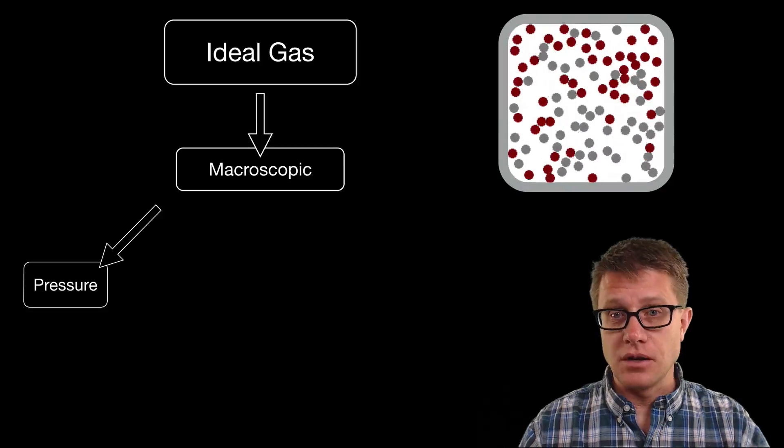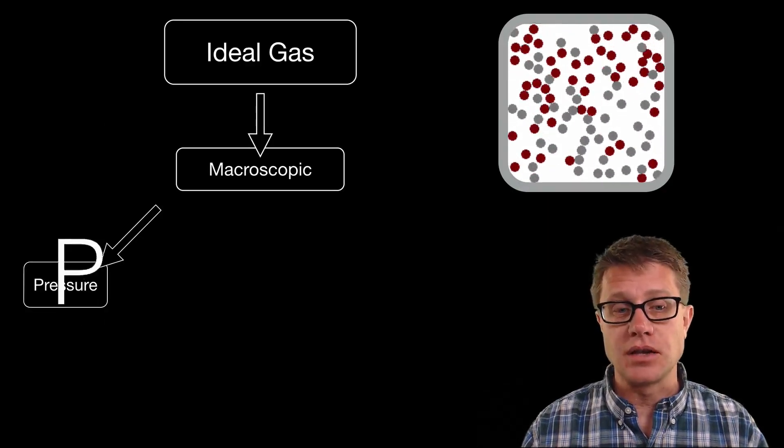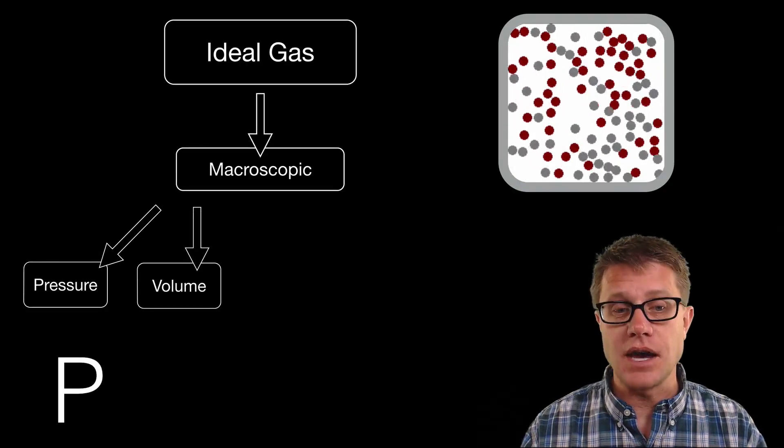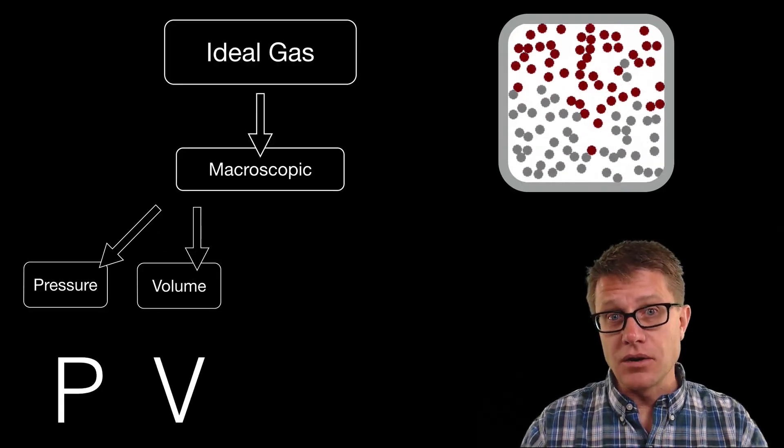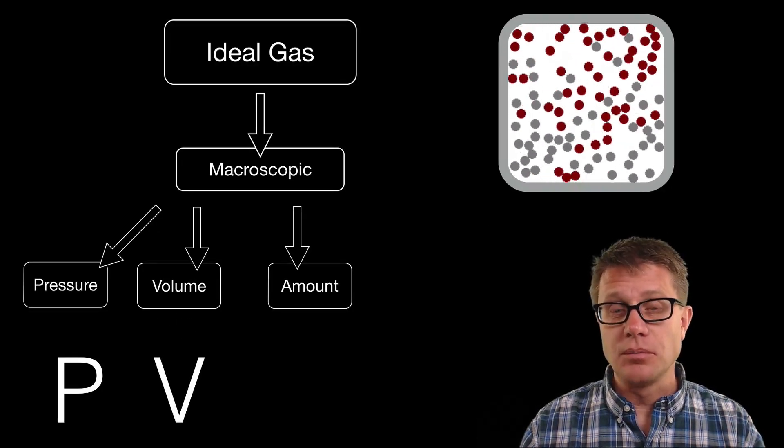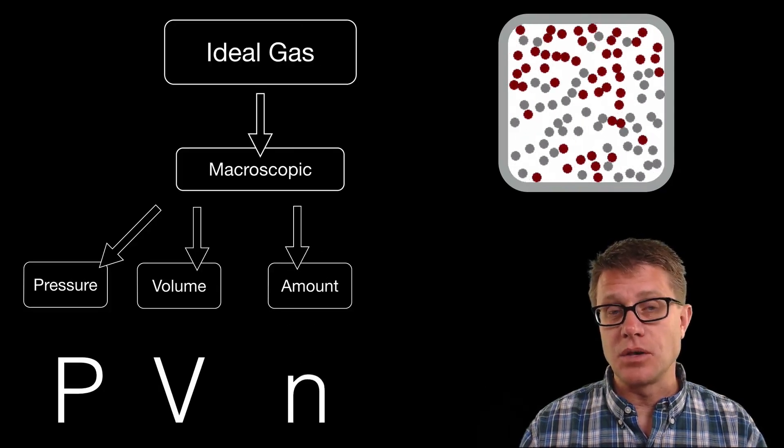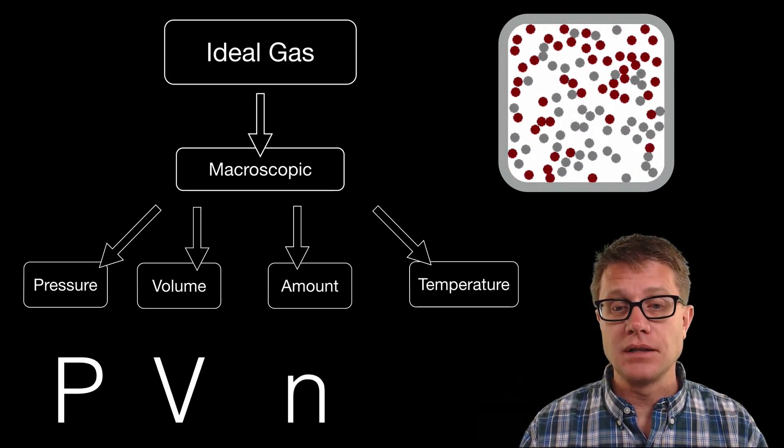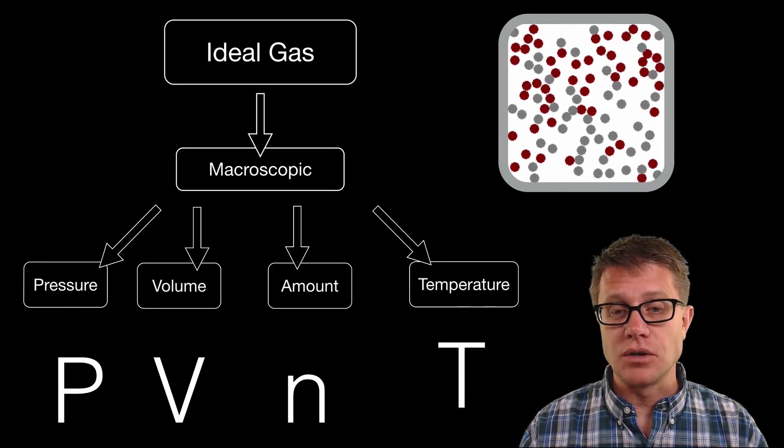We have got the pressure. The pressure exerted by the molecules on the container. We will use P to represent that. We have got volume. That is going to be the area in which the gas is contained. We have got the amount. We will measure that in n which is going to be the moles of the material. And then finally we have got temperature. Temperature is going to be in Kelvin.